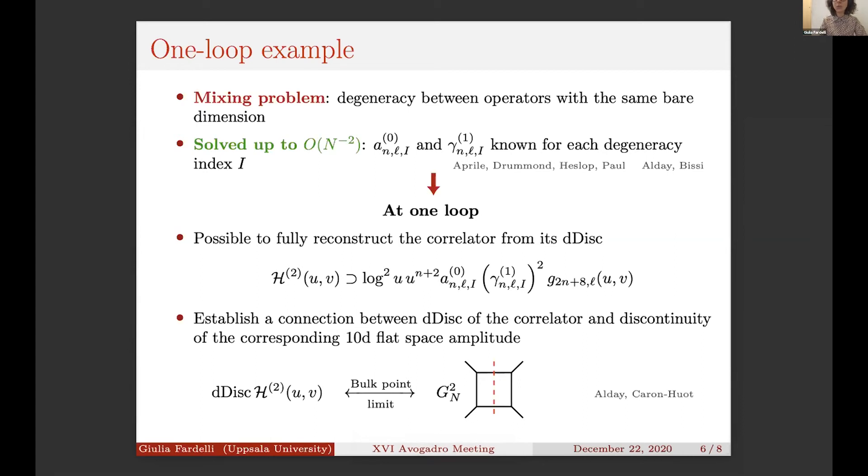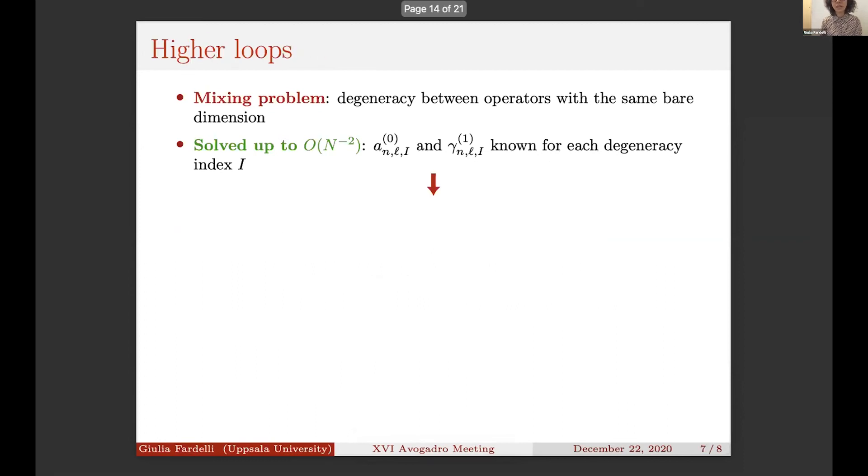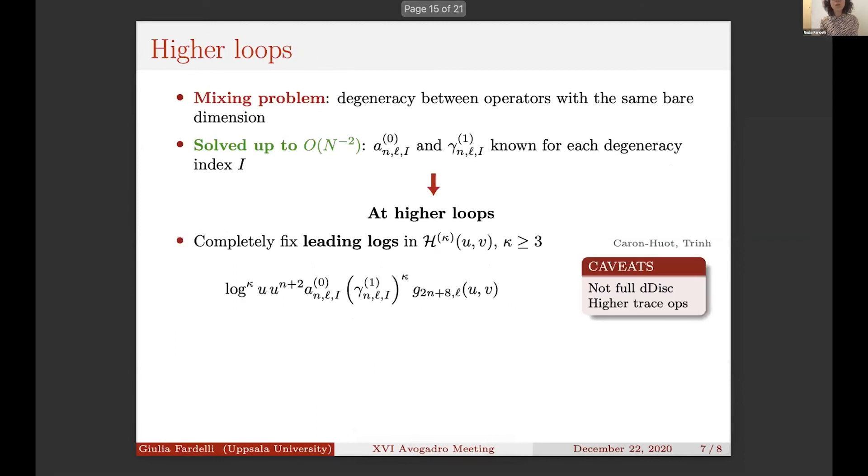Our question was: what can we say at higher order? At higher order, the knowledge of a_0 and γ_1 is still sufficient to fix only part of the correlator, namely these leading logarithms, which are leading in the sense that they are the highest power of log appearing in the corresponding order in the correlation function.